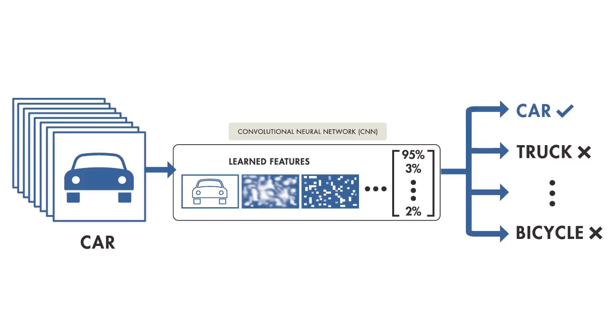On the other hand, with deep learning, you skip the manual step of extracting features from images. Instead, you feed images directly into the deep learning algorithm, which then predicts the object.